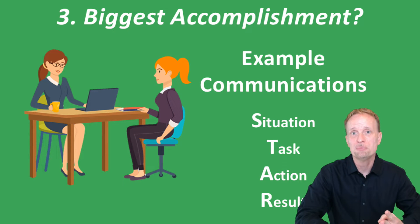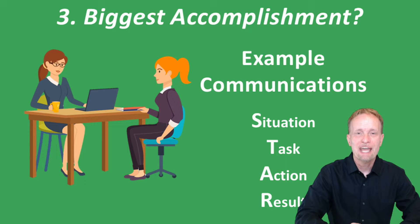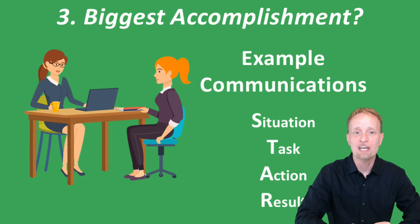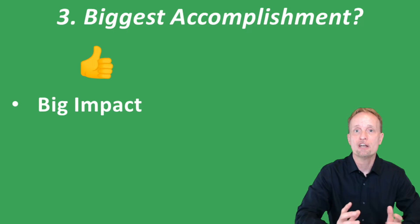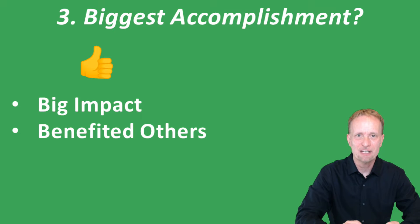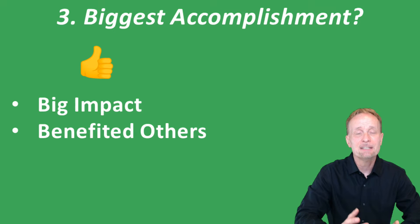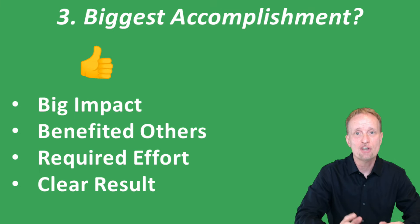Think about things you've accomplished and break them down: what situation were you in, what task were you trying to accomplish, what actions did you take, and what result did you get? Make sure you pick things that have a big impact — you helped a student, you helped an animal shelter, you accomplished something you got an award for. It helps if you benefited others, because universities want students who will make contributions to other people, not just look out for themselves. Make sure to include something that required effort and produced a clear result.